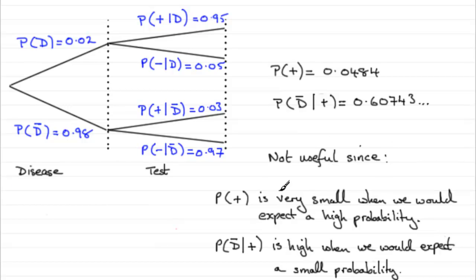So I would write something along these kind of lines. It's not useful since the probability of being positive is very small, when we would expect a high probability. And the probability of not having the disease, given that the test was positive, is high, when we would expect a small probability.